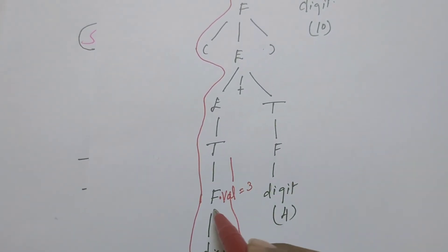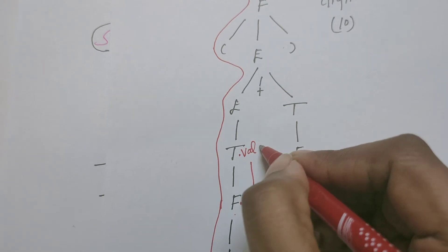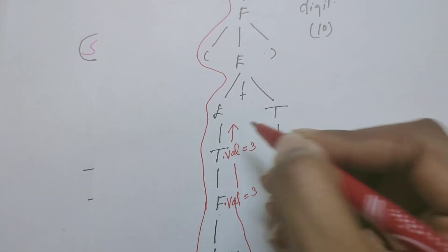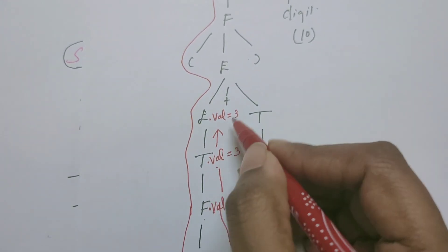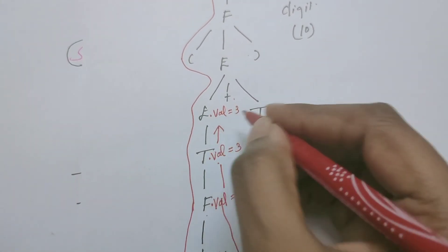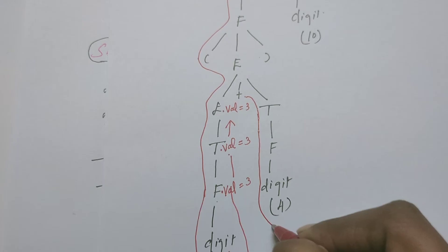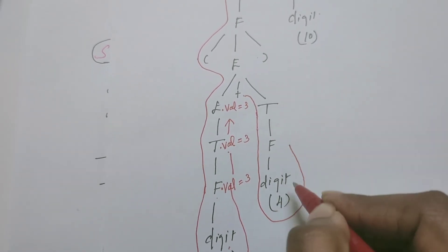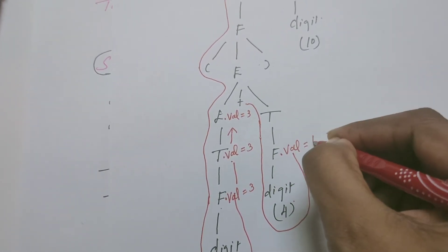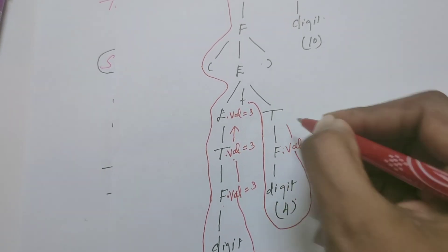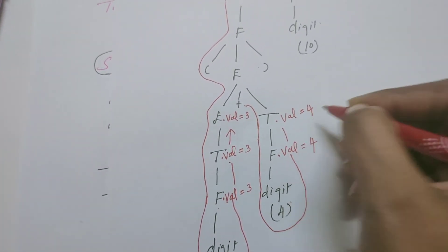Continuing to traverse upward, F is reduced to T, so the value of T is the value of F. Then the value of E is the value of T, which equals 3. Now it visits the node '+', then comes down to T → F, then visits digit and moves upward. Digit is reduced to F, so the value of F is the digit value which is 4. Continuing upward, the value of T is the value of F, which is 4.